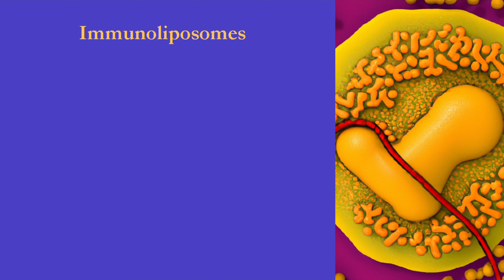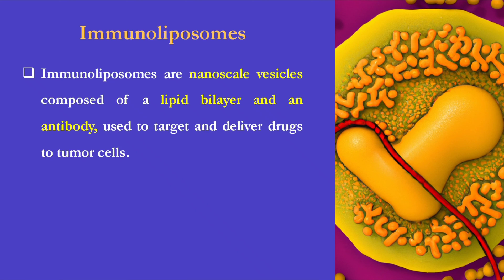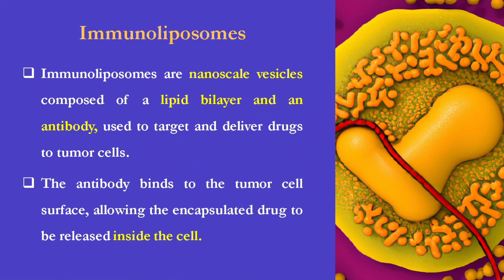Let's see about immunoliposomes. Immunoliposomes are nanoscale vesicles composed of a lipid bilayer and an antibody, used to target and deliver drugs to tumor cells. The antibody binds to the tumor cell surface, allowing the encapsulated drug to be released inside the cell.